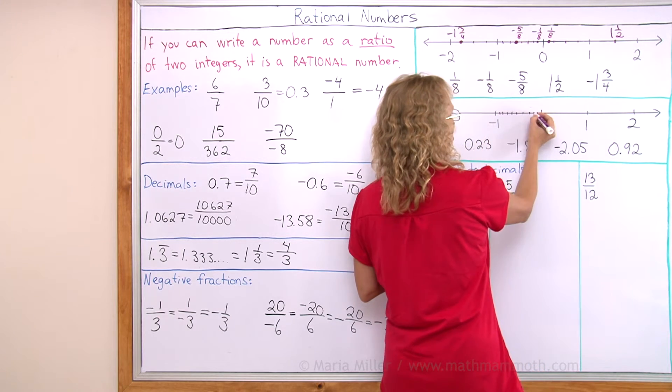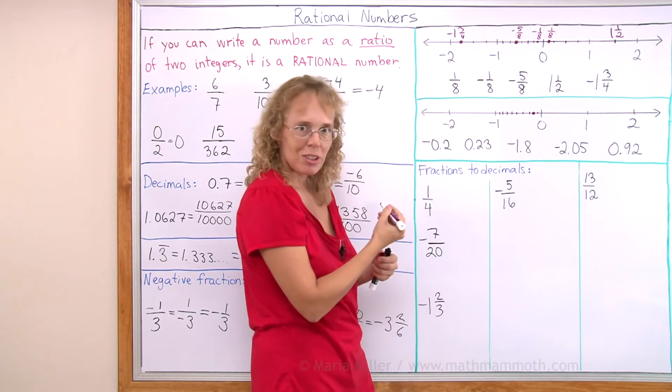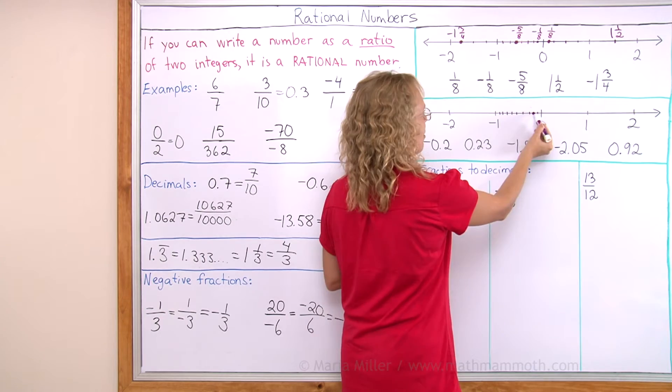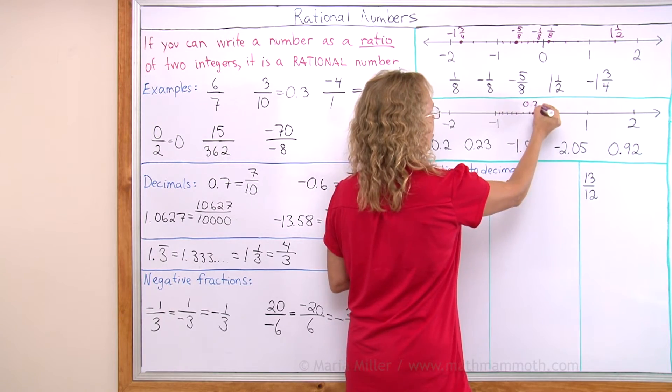And then we go 2/10 towards negative 1, from 0 over here. This is negative 2/10.